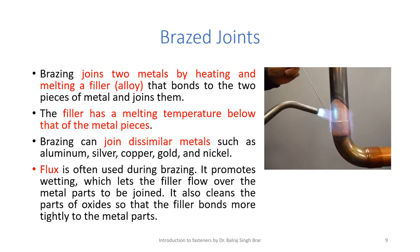Brazed joints: brazing joins two metals by heating and melting a filler alloy that bonds to the two pieces of metal and joins them. The base plates or materials are not melted — only the filler, which usually has a lower melting temperature than the metal pieces, is melted and bonds the two metals together. Brazing can join dissimilar metals such as aluminum, silver, copper, gold, and nickel. Flux is often used during brazing; it promotes wetting, which lets the filler flow over the metal parts, and it also cleans the parts of oxides so that the filler bonds more tightly.